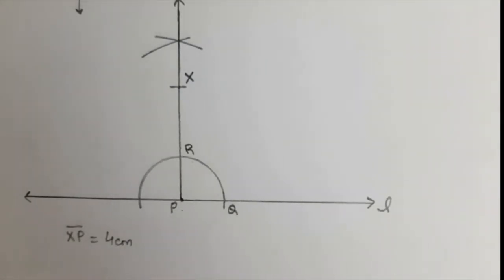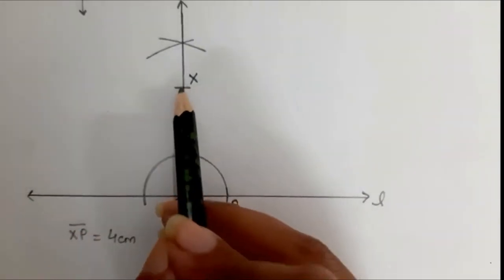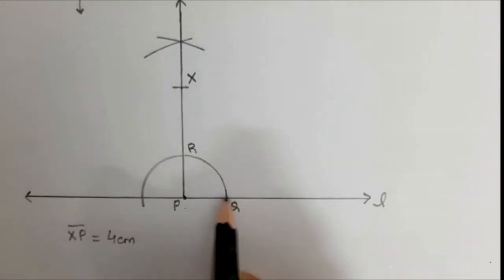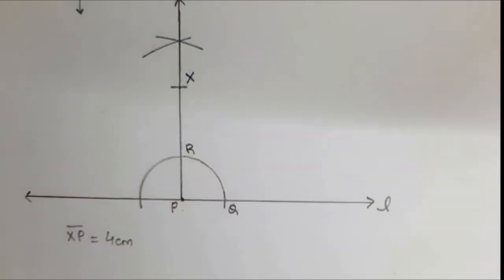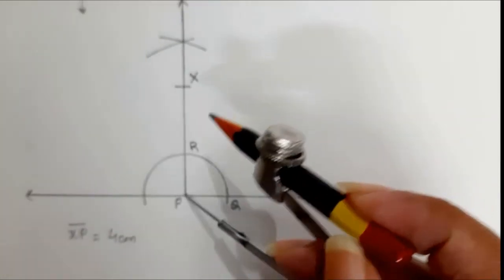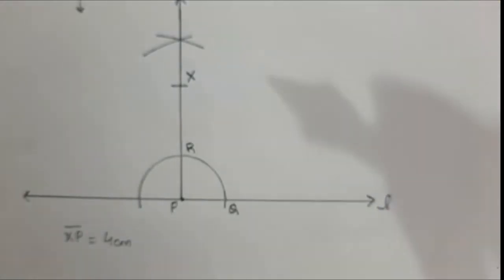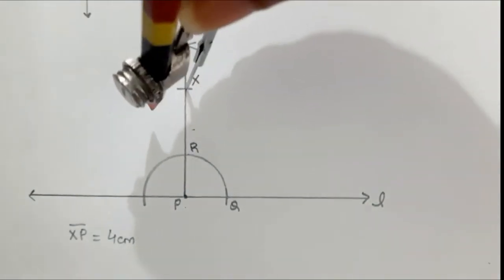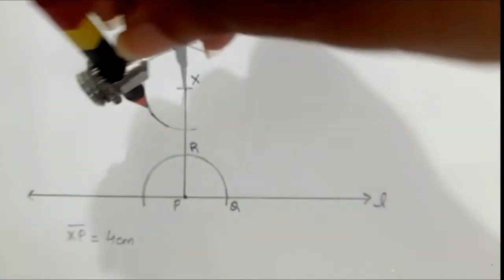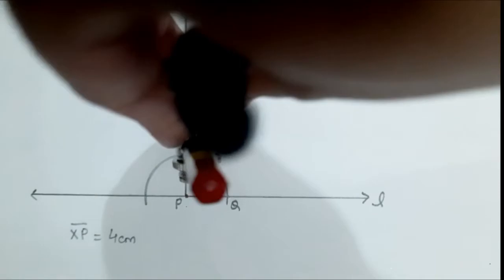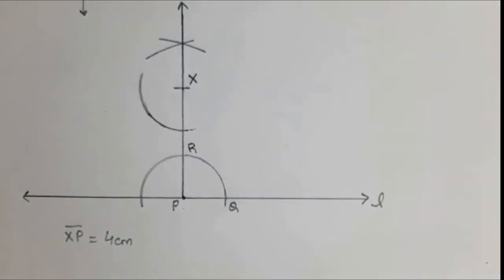The question is now exactly similar to question number 1, where a line was given and a point not on the line was given. Since we were already constructing the perpendicular, we have angle QPR and will now construct the copy of this angle. We take the same radius, place the pointer at X, and draw the arc. We make it a little dark so it is visible clearly. With the same radius, we have drawn this arc.